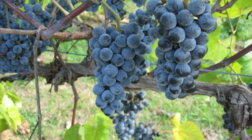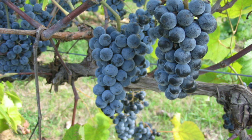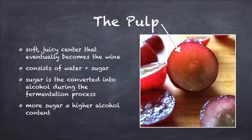Now, let's move on to the grapes themselves. Grapes are approximately 75% pulp, 20% skin, and 5% seeds. The pulp is the soft, juicy center of the grape. It consists of water and sugar, and is the part of the grape that eventually becomes the wine. The sugar is really the critical component in winemaking, because it's the sugar that becomes the alcohol during the fermentation process. Grapes with a higher sugar content at harvest can produce wines with a much higher alcohol content.